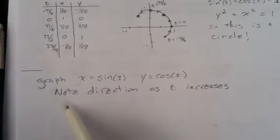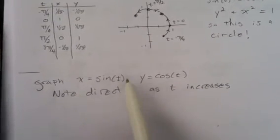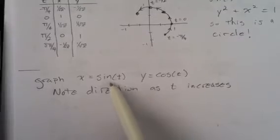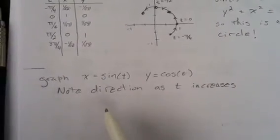And make a table, graph some points for that. You know, you might try picking time going from 0 to 2 pi, because we know sine and cosine are cyclical, periodic, with period 2 pi.